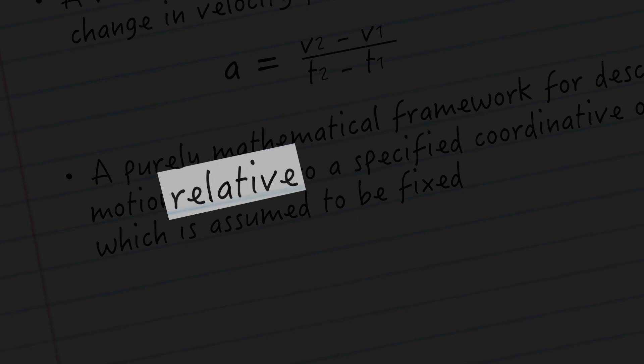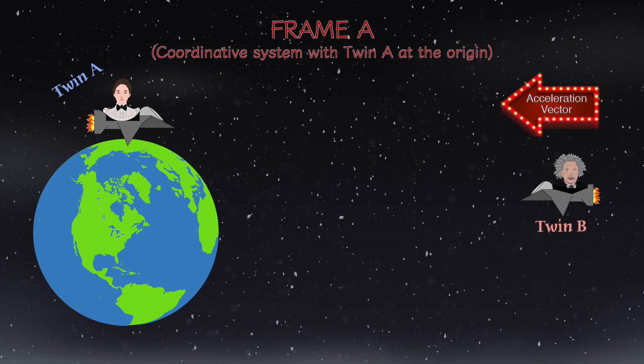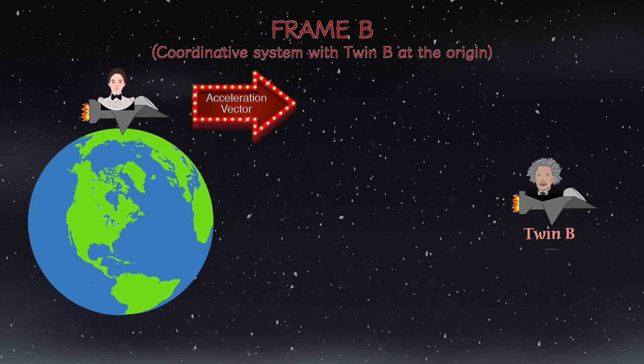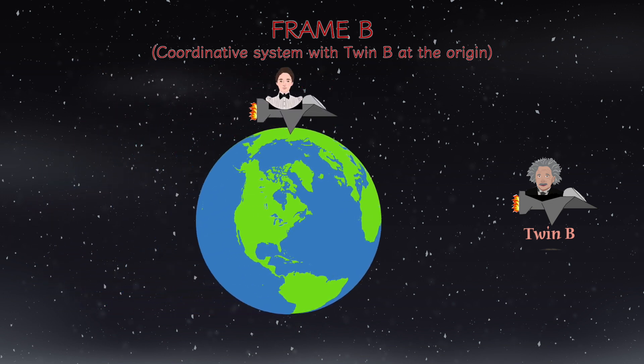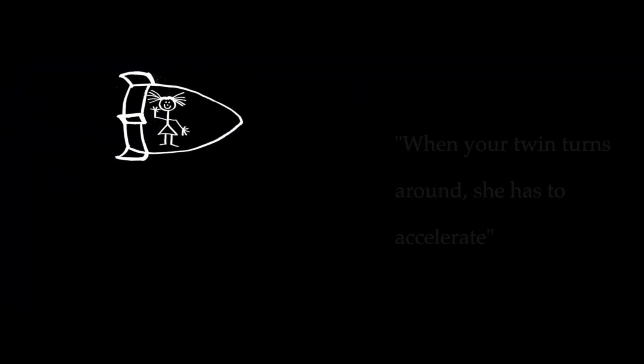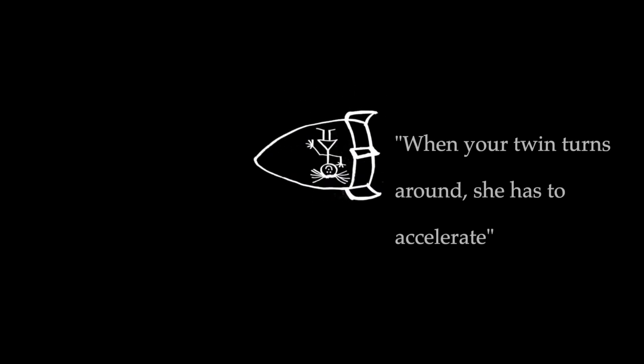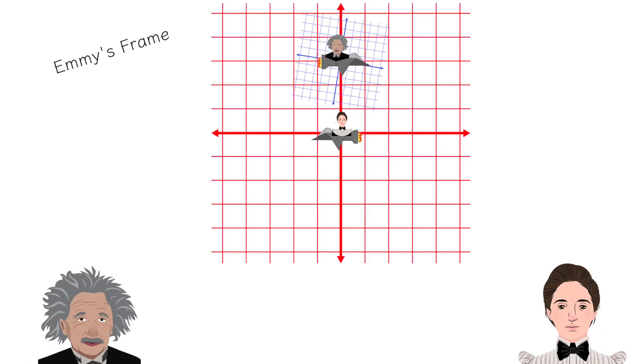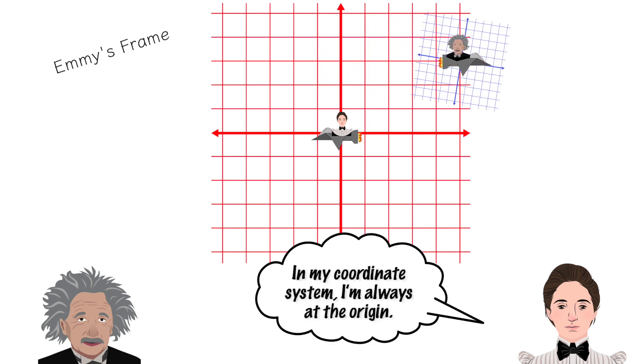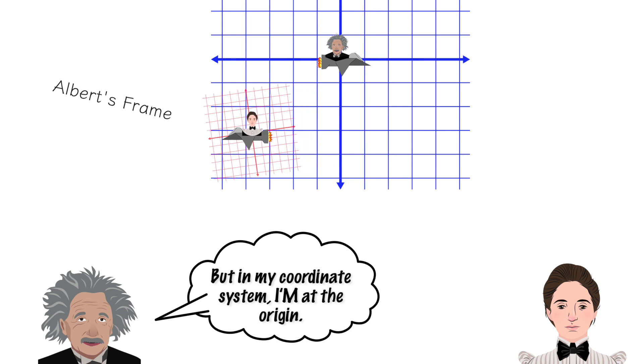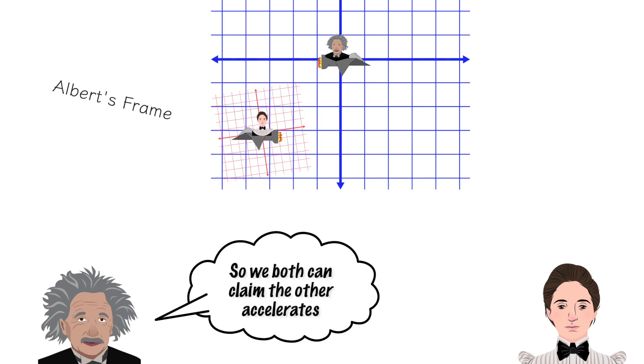That is, twin B has as much a right to say that it is twin A and the earth that is accelerating towards him, and not his spacecraft that is accelerating towards the earth. This means acceleration cannot be the answer. And any video which asserts that it is and leaves it at that is simply wrong. Most newcomers to the paradox will intuitively realize that coordinative acceleration doesn't make any sense as an explanation, but they lack the sophistication to formalize why this is so.